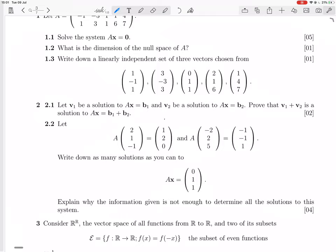So if you want v1 plus v2 to be a solution to Ax equals b1 plus b2, we're going to have to show that A times (v1 plus v2) equals b1 plus b2. But A(v1 plus v2), by linearity, you can just make this Av1 plus Av2, because matrix multiplication is linear. Then Av1 is b1 and Av2 is b2, so yeah, you'll be done. That's all we need to do.